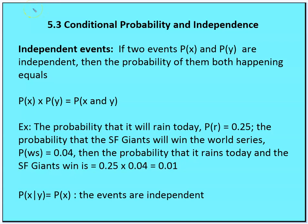For independent events X and Y, P(X and Y) = P(X) × P(Y). For example, if P(rain today) = 0.25 and P(Giants win World Series) = 0.04, then P(rain and Giants win) = 0.25 × 0.04 = 0.01, since these events are independent.